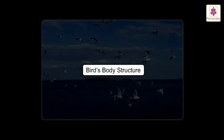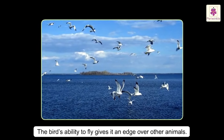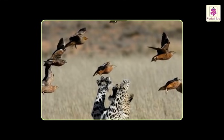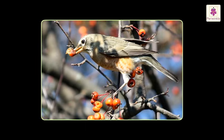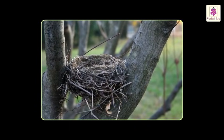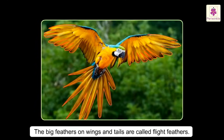Let us study about birds' body structure. The bird's ability to fly gives it an edge over other animals. It helps them to escape from danger and catch and find food easily. They can build nests at places beyond the reach of other land animals. All birds have feathers and wings. The big feathers on their wings and tails are called flight feathers.